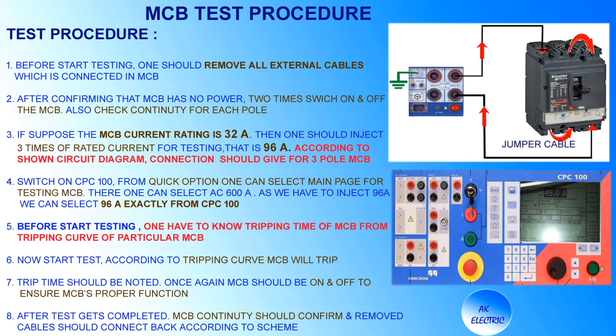Now let's see the MCB testing procedure. Before starting the test, remove all external cables connected to the MCB. After confirming MCB has no power, switch it on and off two times, then check continuity for each pole. If the MCB current rating is 32 ampere, inject three times the rated current for testing — that is 96 ampere. Connection should be given according to the diagram for a 3-pole MCB.